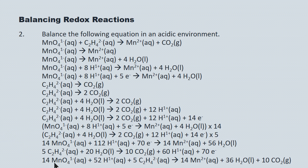Let's do a check. There are 14 manganese going in and 14 coming out. There are 52 plus 20 = 72 hydrogen atoms on the left and 36 × 2 = 72 hydrogen atoms on the right. There are 14 × 4 = 56 oxygen atoms going in and 36 + 20 = 56 oxygens coming out. Finally, the charge on the left is 14 negative plus 20 negative plus 52 positive, giving 28 positive; and 14 × 2 = 28 positive on the right. So the equation is balanced — it's ugly, but it's balanced. Because these things are so complex, it's important you follow the scheme carefully.